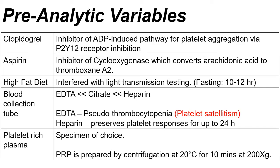You have to consider a lot of factors that would affect platelet aggregation results. First, medications — for example, clopidogrel is a known inhibitor of the ADP pathway. ADP is one of the in vivo agonists of platelet aggregation. Clopidogrel inhibits platelet aggregation via inhibition of the P2Y12 receptor. Aspirin inhibits platelet aggregation by inhibition of cyclooxygenase, the key enzyme for conversion of arachidonic acid to thromboxane A2.